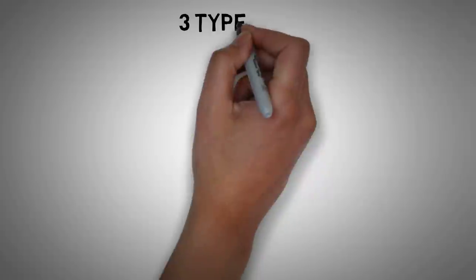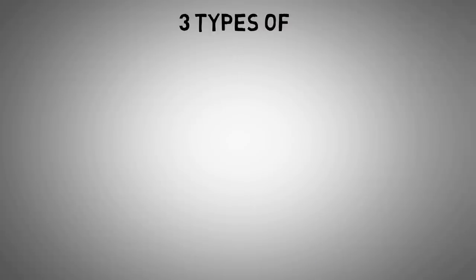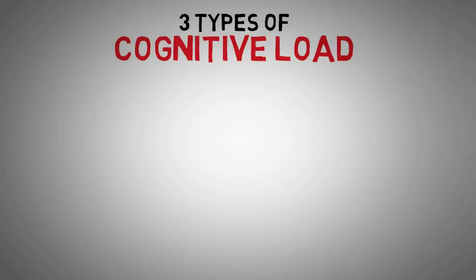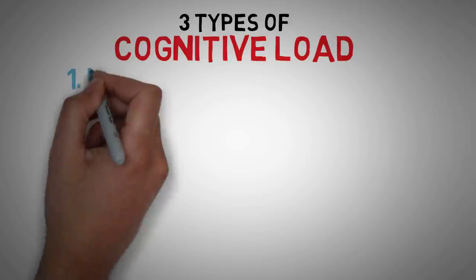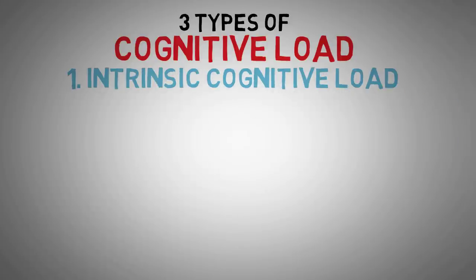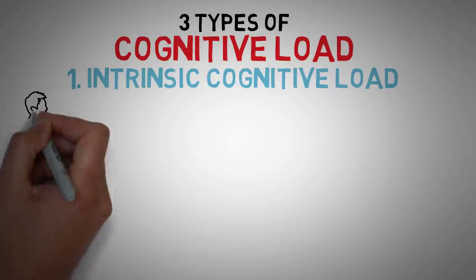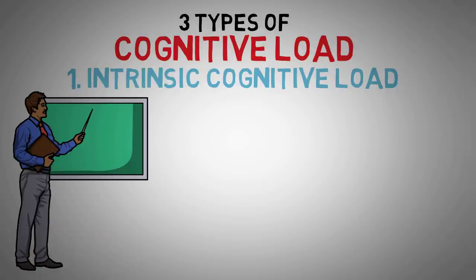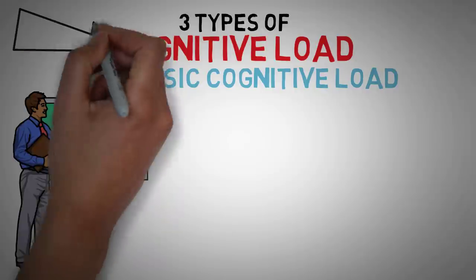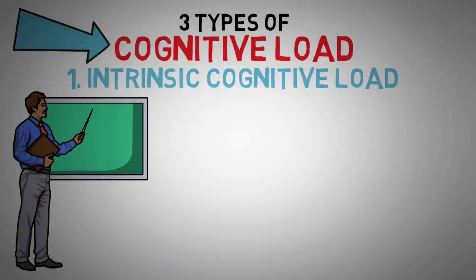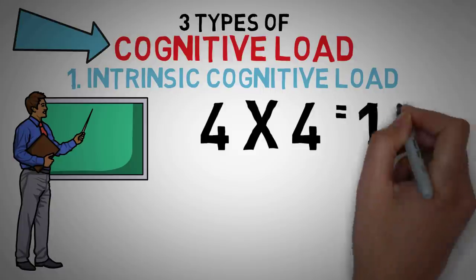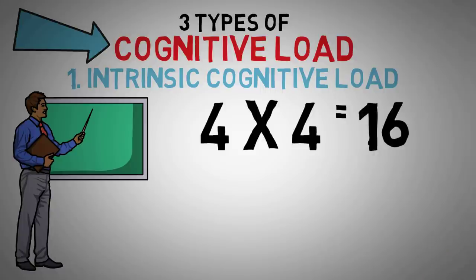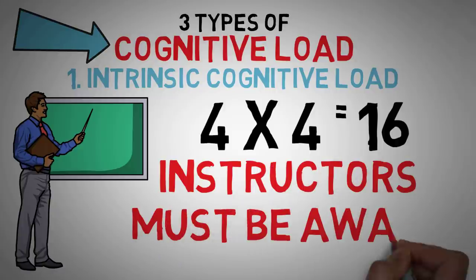So there are three types of cognitive load that may or may not be manipulated by teachers or instructors. The first type is intrinsic cognitive load. This refers to the level of difficulty of the information someone is wanting to share. For example, the theory of cognitive load has a little bit more intrinsic cognitive load than a simple mathematical fact like 4 times 4 equals 16. Instructors and teachers can't manipulate the intrinsic cognitive load, but you should be aware of it whenever you're teaching something like this.